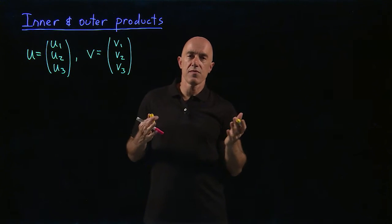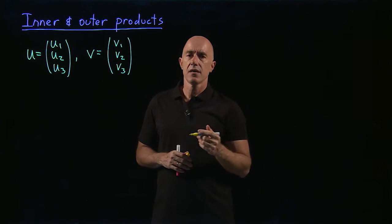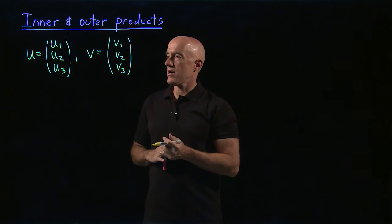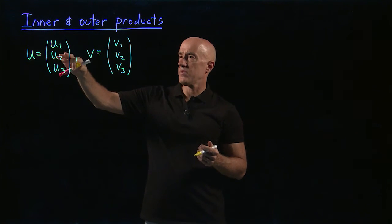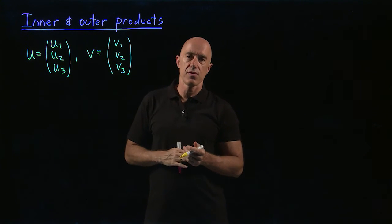So the inner product is the same thing as the dot product, if you've learned the dot product before. So the dot product between these two vectors, or the inner product, should be u1v1 plus u2v2 plus u3v3.